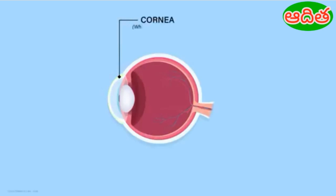The outer layer of the eye is called the cornea. It's white in colour and transparent — meaning it allows light to pass through it. It acts like a tough front wall of the eye. Its function is to protect the interior of the eye from accidents and also to not allow foreign particles to enter the eye.